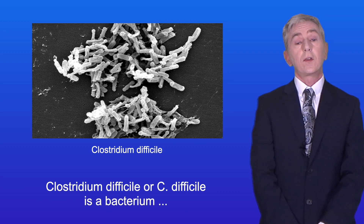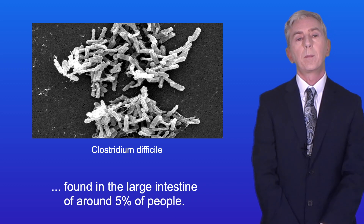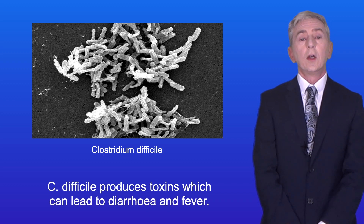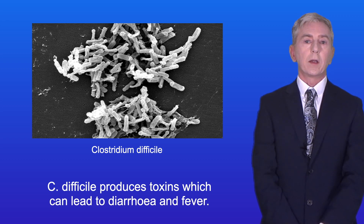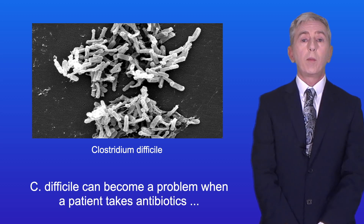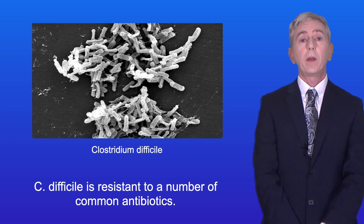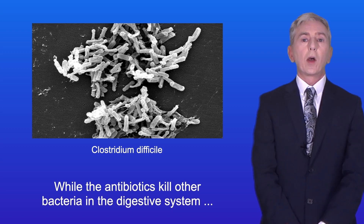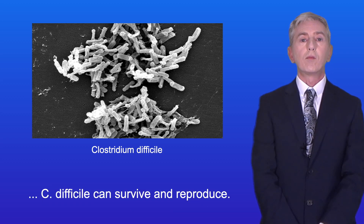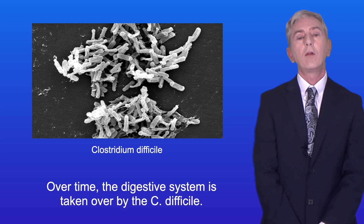Clostridium difficile, or C. difficile, is a bacterium found in the large intestine of around 5% of people. C. difficile produces toxins which can lead to diarrhea and fever, and in some cases it can be fatal. C. difficile can become a problem when a patient takes antibiotics for a different infection, because C. difficile is resistant to a number of common antibiotics. While the antibiotics kill other bacteria in the digestive system, C. difficile can survive, reproduce, and over time take over the digestive system.